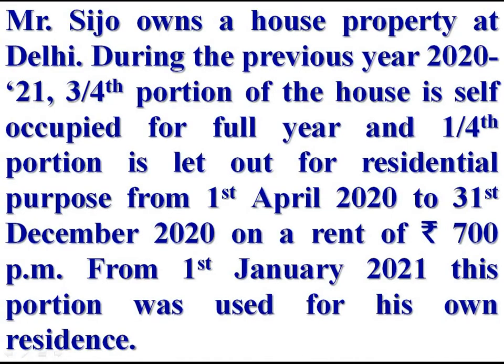Mr. C. Joe owns a house in Delhi. During the previous year 2021, three-fourth portion of the house is self-occupied for the full year and one-fourth portion is let out for residential purpose from 1 April 2020 to 31 December 2020 on a rent of Rs 700 per month. From 1 January 2021, this portion was used for his own residence.